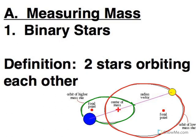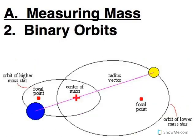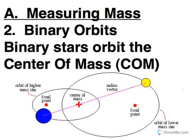But when you have two objects that are much closer in size, then they're both going to be orbiting around. And the point around which they orbit is called the center of mass.